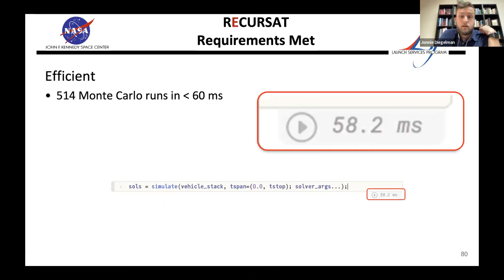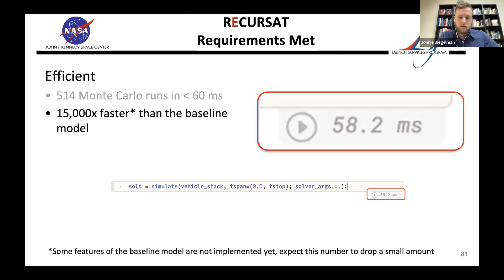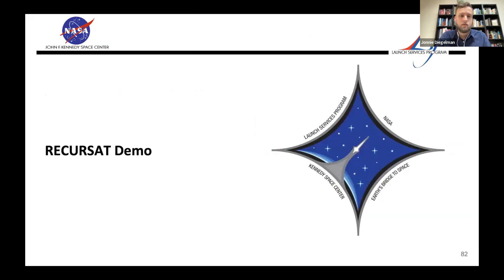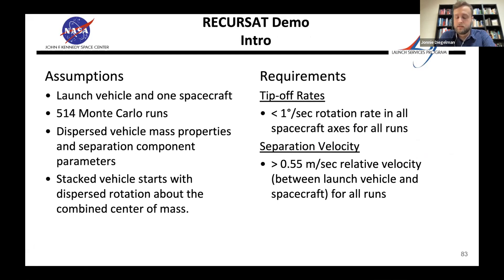On efficiency: we're under 60 milliseconds for the same set of runs that took 15 minutes in the Simulink tool — that 15,000x number is remarkable. We're still incorporating some features so it might take twice as long when done, but even so, that's still incredibly fast.